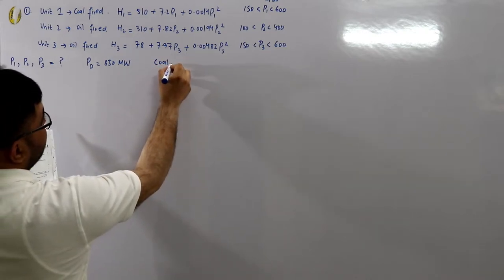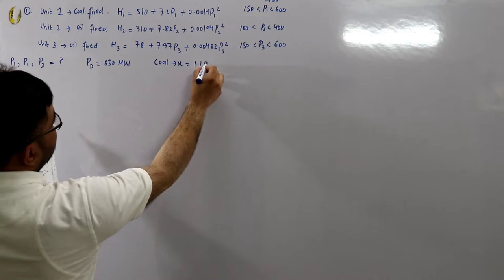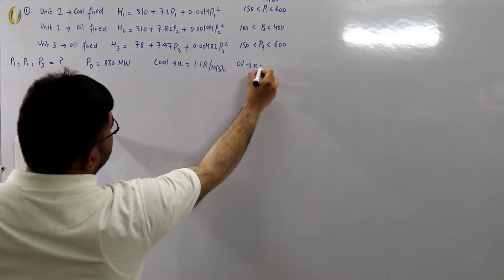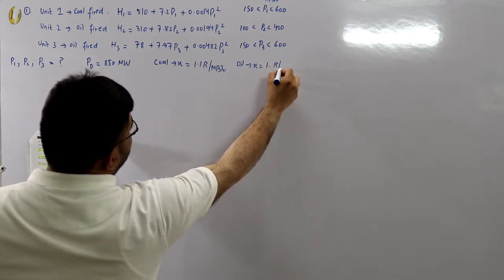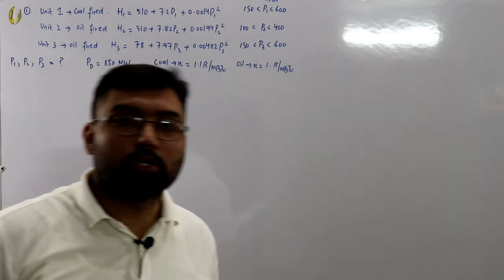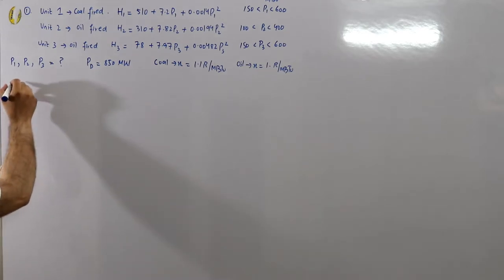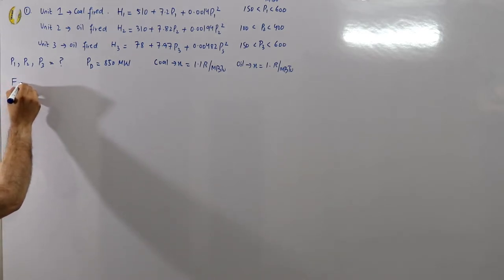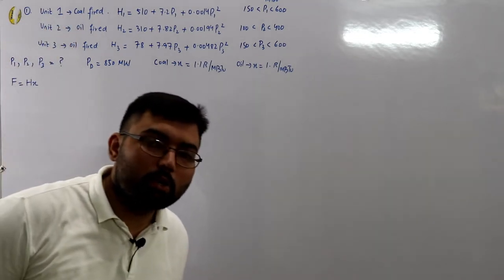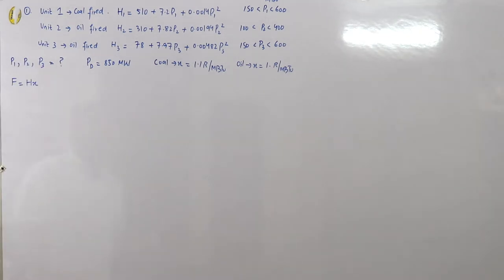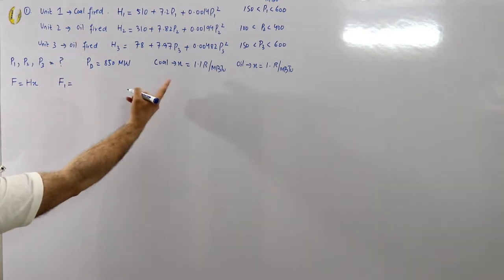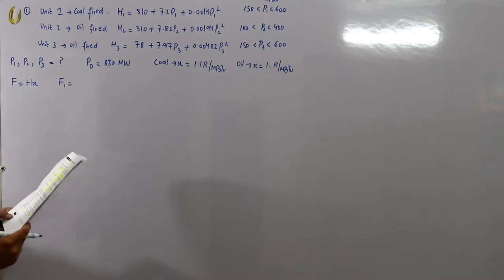Assume the coal cost is 1.1 rupees per MBTU and for oil the cost is 1 rupee per MBTU. First of all, we need the objective function f = h × x. We are given h; convert it to f by multiplying with x.